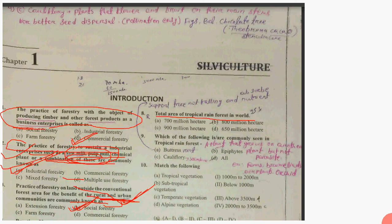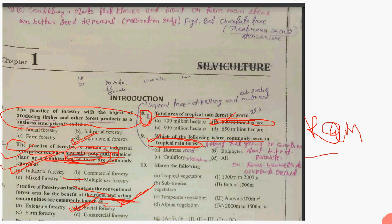The total area of tropical rainforest in the world — this is a memory-based data question, so remember this data: 800 million hectares. Moving to the next question: which of the following is commonly seen in tropical rainforests?